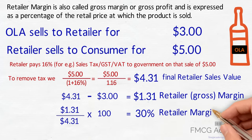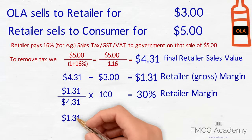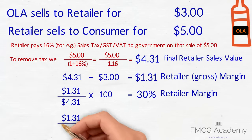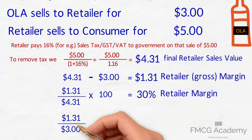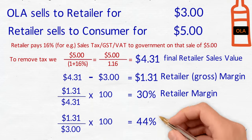Some retailers like to express this margin as a markup, which is simply dividing one dollar and 31 cents by the product cost to the retailer — which is three dollars — and multiplying by 100 to get 44 percent.